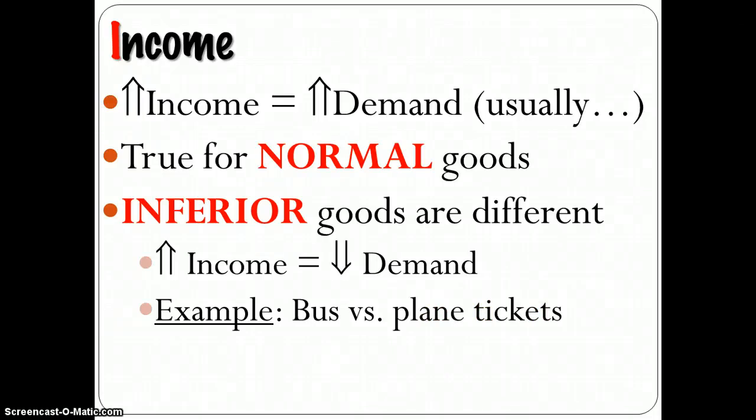And an example for that would be bus versus plane tickets. Clearly, a plane is considered a normal good. We would much rather travel by plane than bus. And if my income rises, I'm going to buy more plane tickets. But if my income were to drop, then I would choose buses over planes in order to be economical. Or put a different way, if my income rises, I'm going to purchase fewer bus trips because I now have enough money to be able to pay for a plane trip, which is more preferable. So in those cases, in which a rise in income leads to a decrease in demand, we're talking about inferior goods. Most of the time, though, we're talking about normal goods, where a rise in income will lead to an increase in demand.